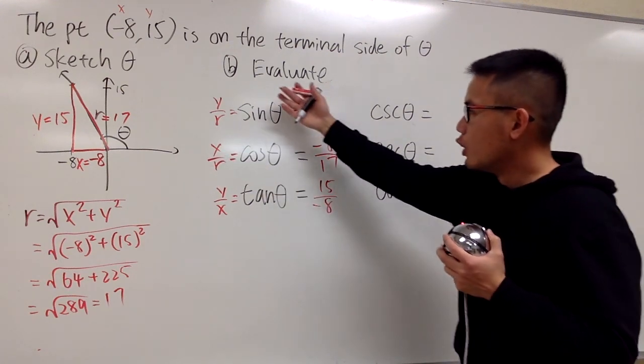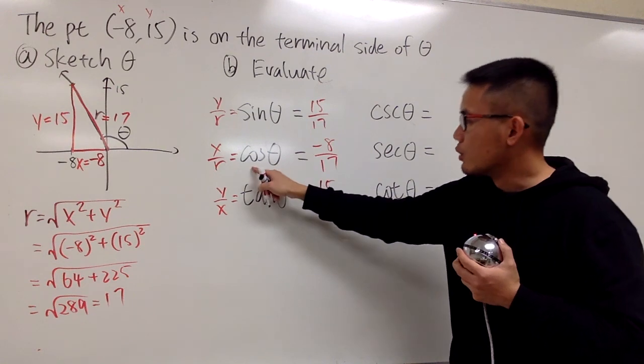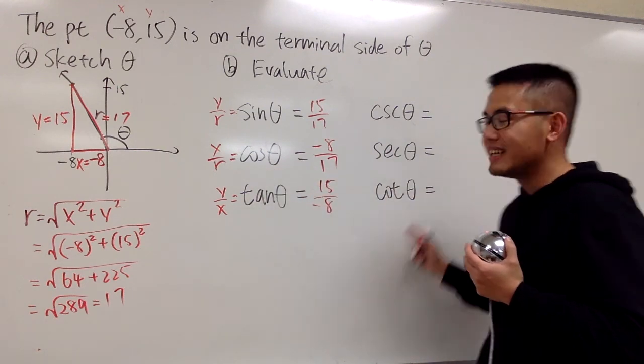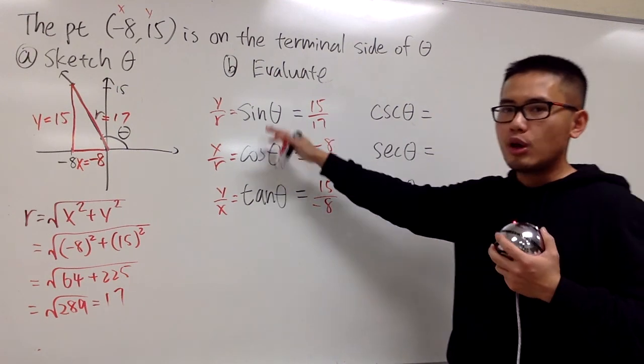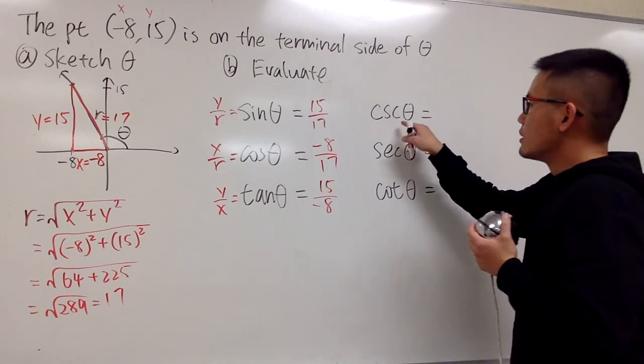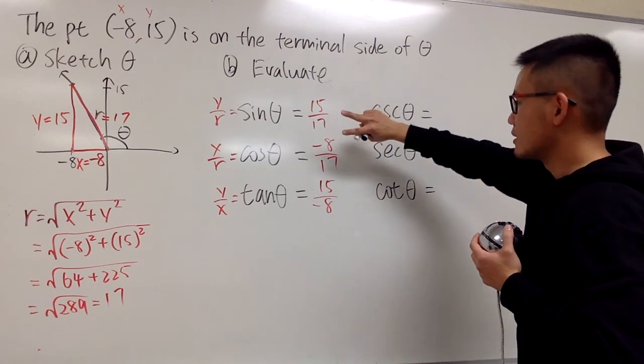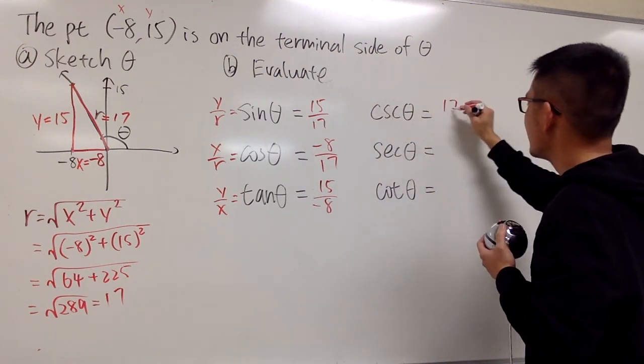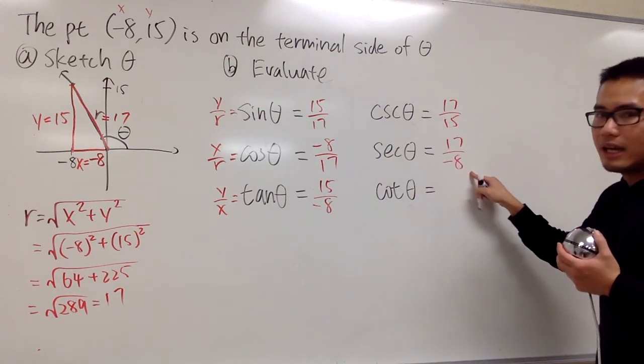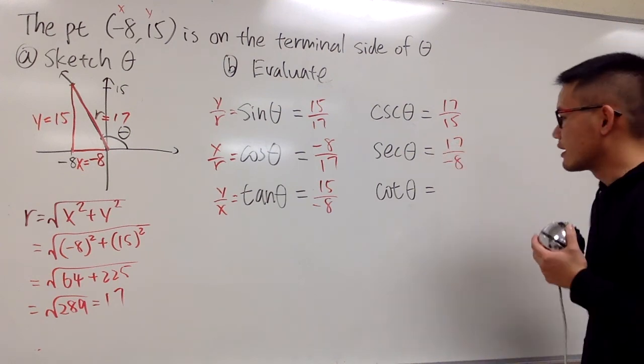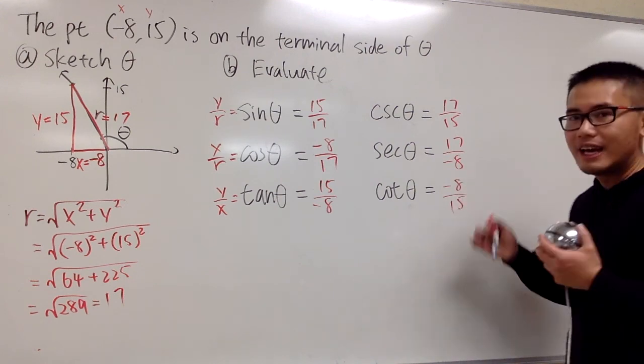And once again, if you set up the equation like this: sine, cosecant, cosine, secant, tangent, cotangent. These three right here are pretty much for free, because these three are just the reciprocal of these three, accordingly. Cosecant theta is just the reciprocal of sine theta, so we will just flip that. 17 over 15. This right here is 17 over negative 8. If you would like, you can put the negative in the front or on top. Doesn't matter. Last one. Flip that. We have negative 8 over 15. And that's it.